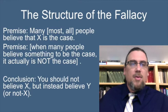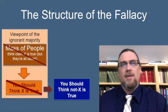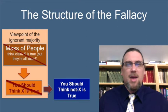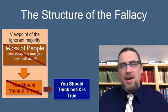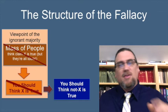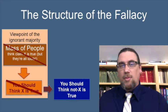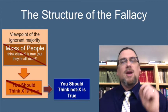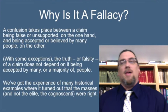Another way to look at this — I've got it represented graphically. The viewpoint of the 'ignorant majority': the mass of people think claim X is true, but they're all idiots. The fact that the mass thinks X is true means they also think you should believe X. But you're not one of those people — you're not a conformist, you're smarter than them. Therefore you should think not-X is true. That's the structure laid out.